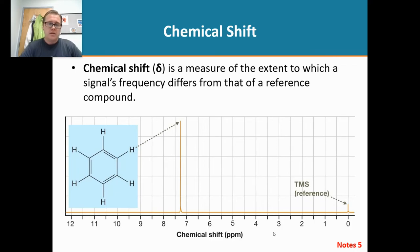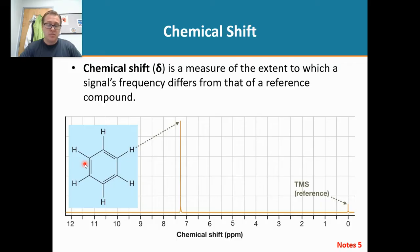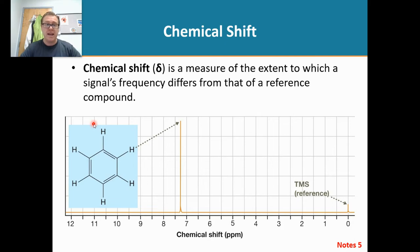The next thing we need to talk about is the term chemical shift. When we look at benzene, we see that there are six protons, and those six protons give us one signal. Those six protons on benzene give us a chemical shift at around 7.2 ppm.